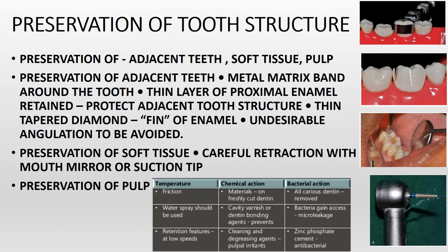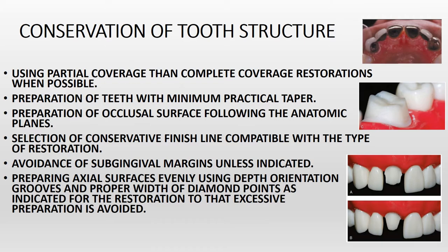The next sub-principle is conservation of tooth structure — meaning you prepare the tooth as conservatively as possible. First, use a partial coverage rather than complete coverage restoration, as partial coverage requires comparatively more conservative preparation. Next is preparation of teeth with minimal practical taper. Taper refers to the angulation — similar to the convergence done in amalgam preparations. To conserve tooth structure, you prepare with the minimum possible taper.